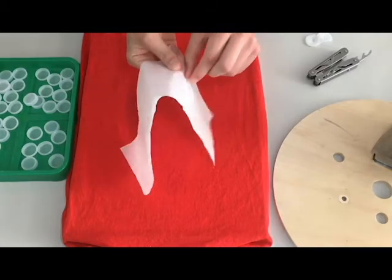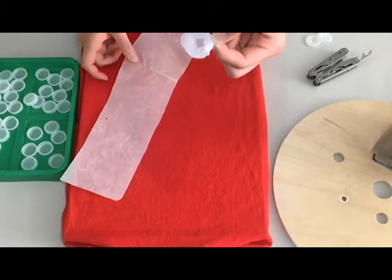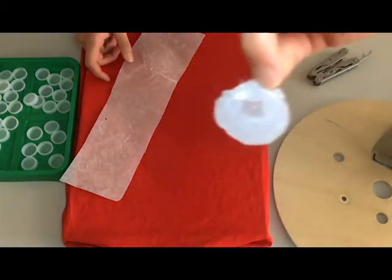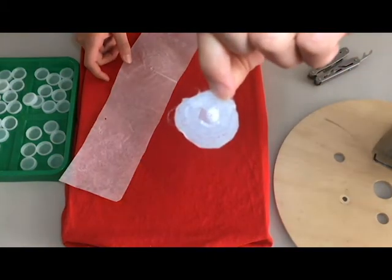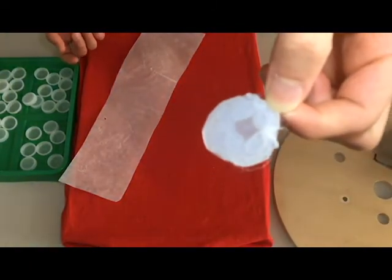All right now it's good, now you just take it off like this and there you have your bottle cap. Now you just have to do that another 30 or 40 more times and then put them together in a chain. Let's do it.